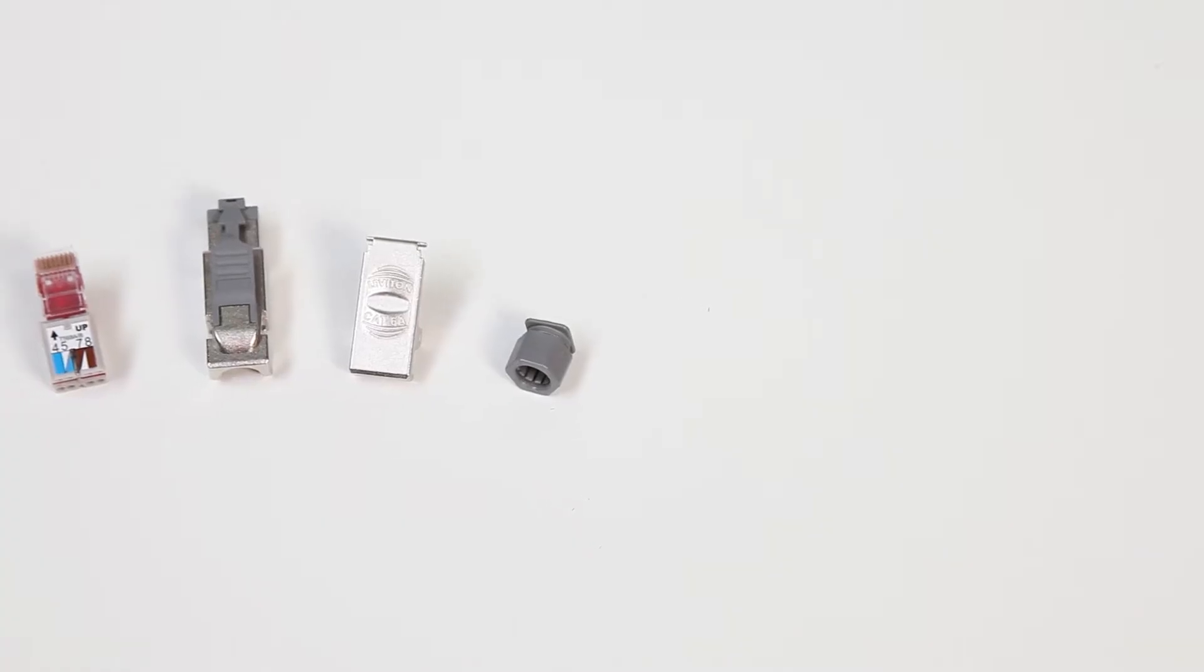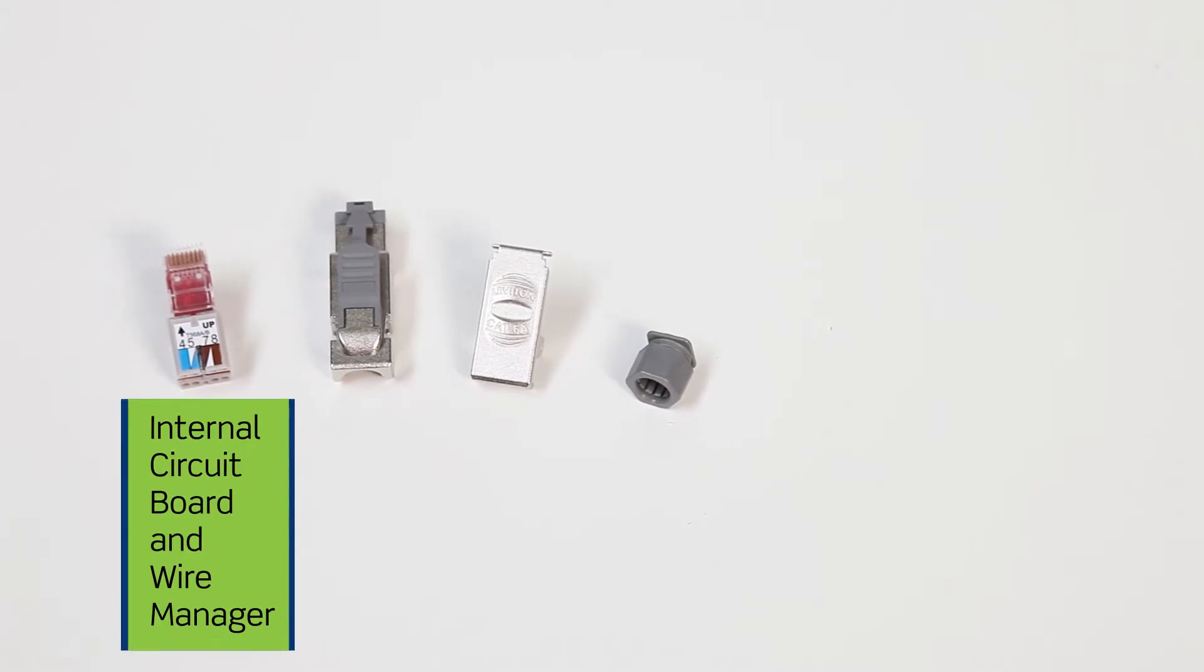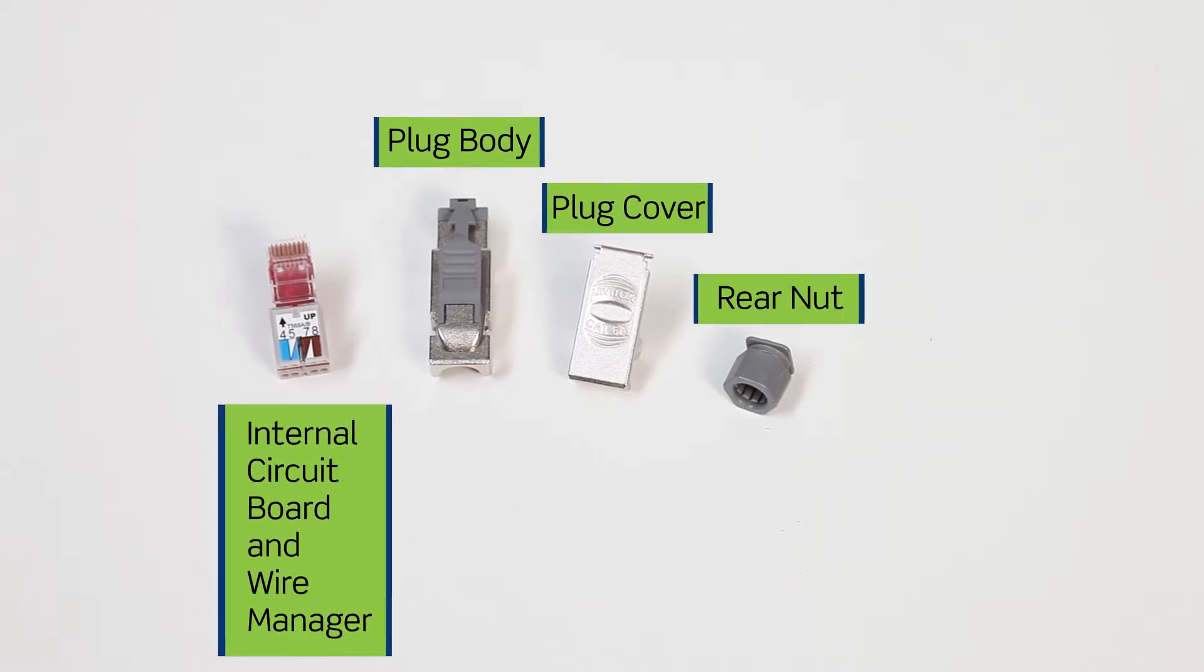The CAT 6A tool-free plug comes with the following parts: the internal circuit board and wire manager, the plug body, the plug cover, and the rear nut.